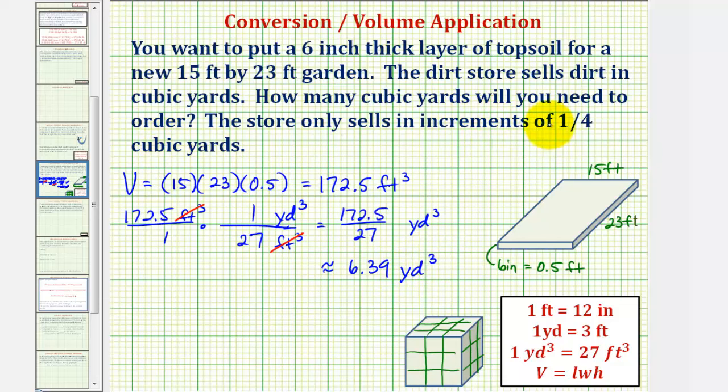But the dirt is only sold in increments of one-fourth cubic yards, where one-fourth is equivalent to 0.25 cubic yards. We'll notice that 6.25 cubic yards would not be enough, so we'll have to round this up to six-and-a-half, or 6.5 cubic yards for our order.